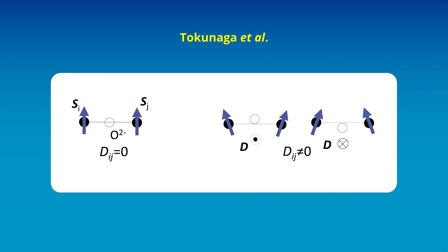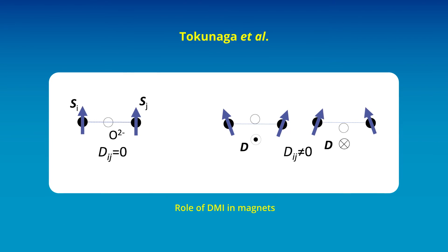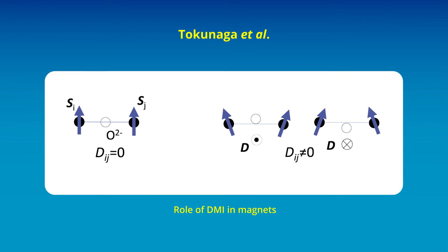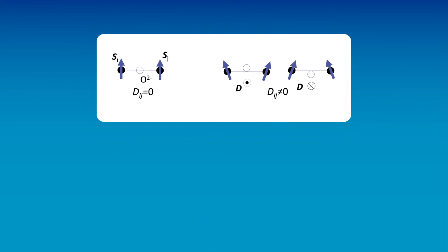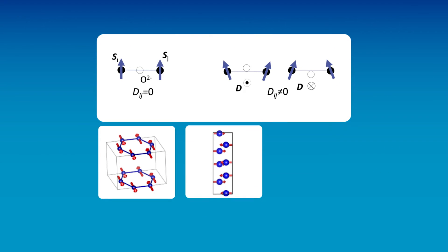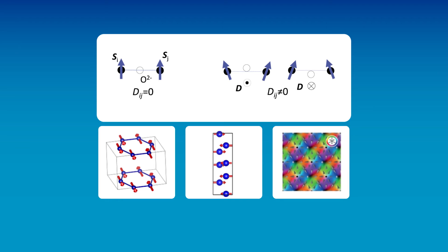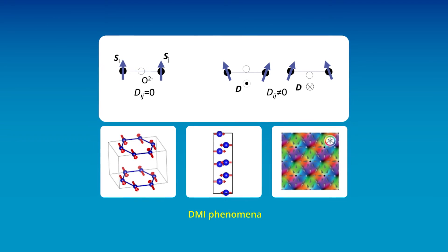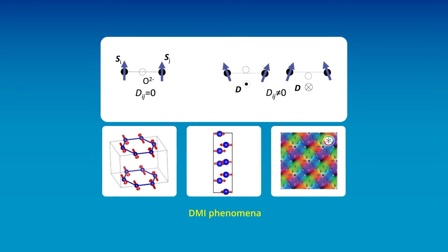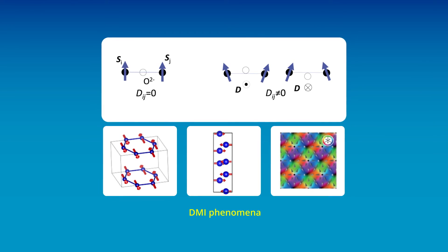Finally, Tokunaga et al. look at the inverse effect of DMI on magnetoelectric multiferroics and skyrmion materials. They classify these materials based on their magnetic structure and also present examples of DMI phenomena such as non-linear magnetoelectric effects and the formation of magnetic skyrmions.